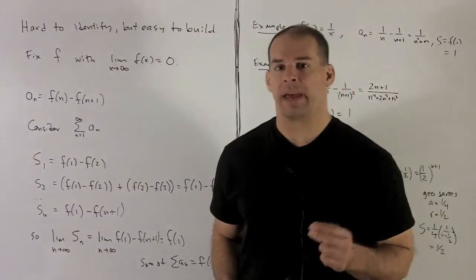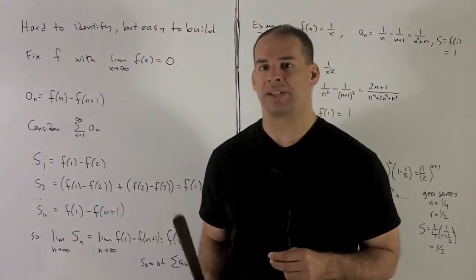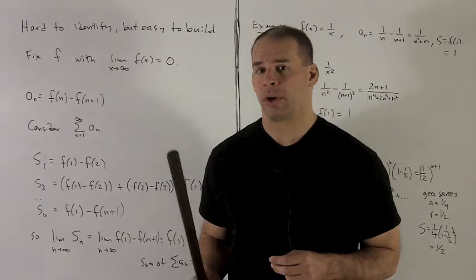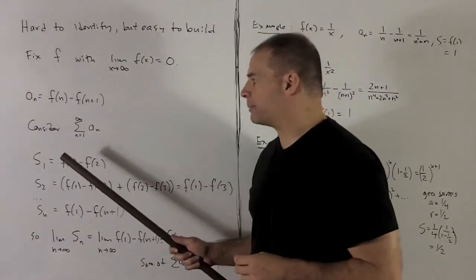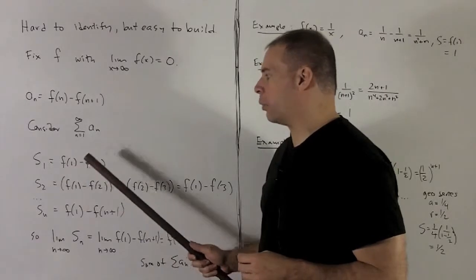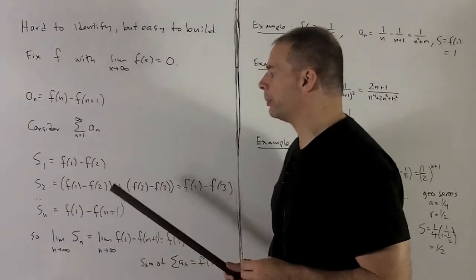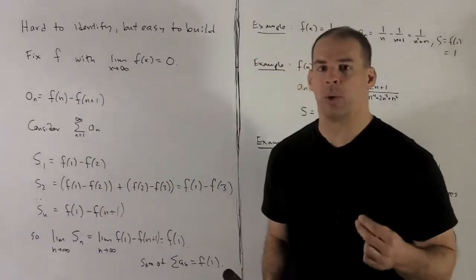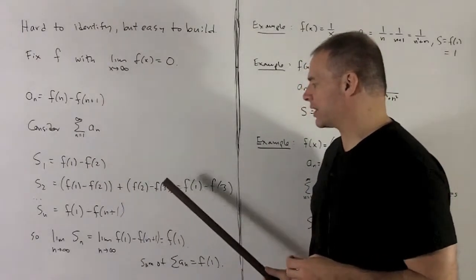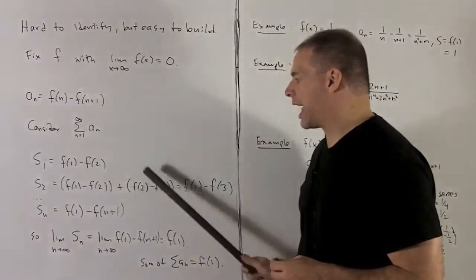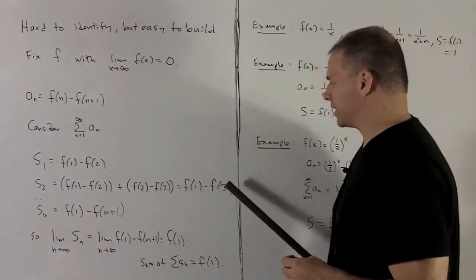We're going to define a sequence, a sub n, by f of n minus f of n plus 1. Then we're going to consider the series for a sub n. Partial sums: s sub 1 is equal to a1, which is f1 minus f2. s sub 2 is equal to a1 plus a2, which is f1 minus f2 plus f2 minus f3. The inside collapses to leave me with f1 minus f3.